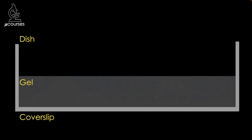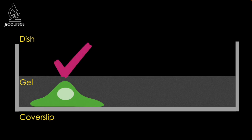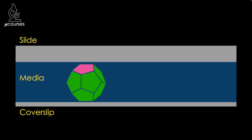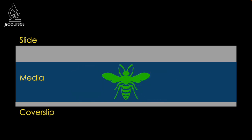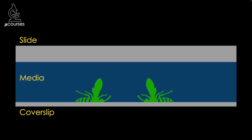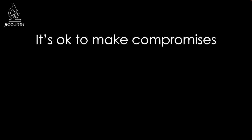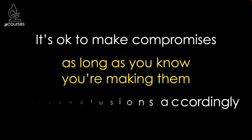When imaging live cells in coverslip-bottom dishes, grow the cells as close as possible to the glass surface. If your specimen requires a gel matrix, image quality will be far better if the cells are attached to the coverslip with the gel on top, versus growing the cells on top of the gel. When working with larger specimens, try to mount them so the area of interest is closest to the coverslip, or cut or section the specimen to get the area of interest close. If your sample absolutely cannot be placed on the coverslip, you'll most likely need to accept lower image quality as a compromise.